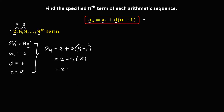Then we have 2 plus 3 times 8, which is 24. So therefore, a sub 9, or the 9th term, is 26.